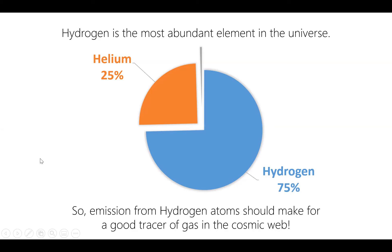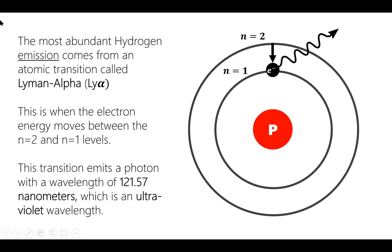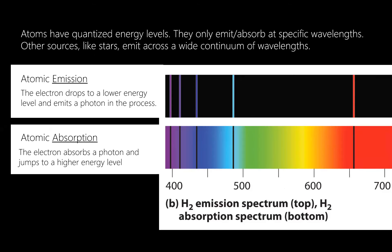If we want to look at the cosmic web, hydrogen is the obvious first choice — it will be the brightest and most readily available source. Atoms emit and absorb radiation. A hydrogen atom is just a proton and electron bound together; when the electron changes energy levels, that's associated with emission or absorption of light. The most abundant hydrogen emission comes from the transition where the electron goes from the second to the first energy level, emitting a photon we call Lyman-alpha.